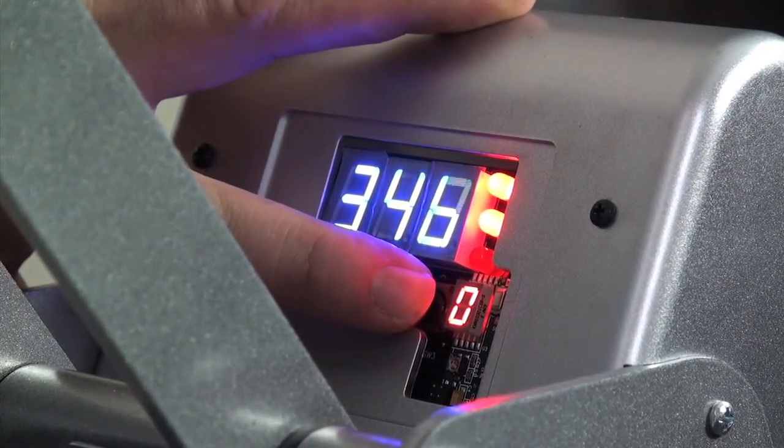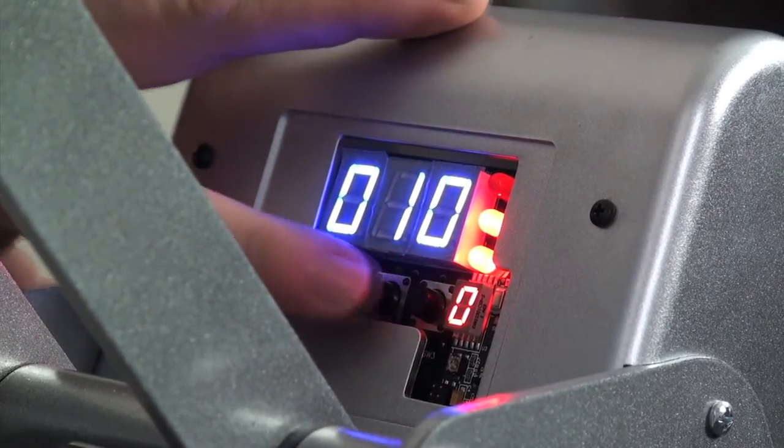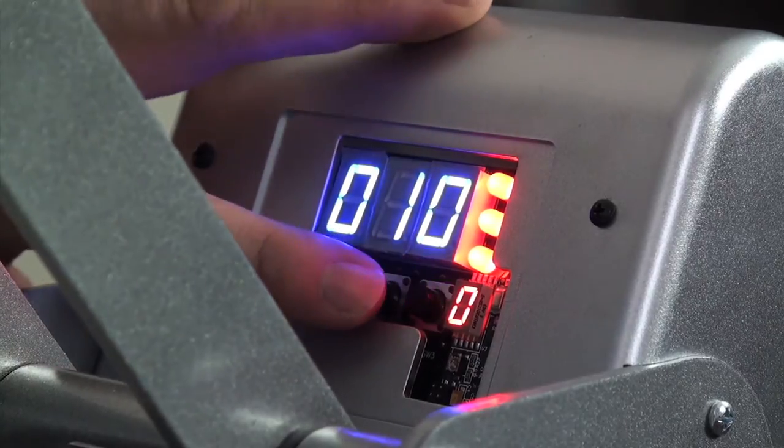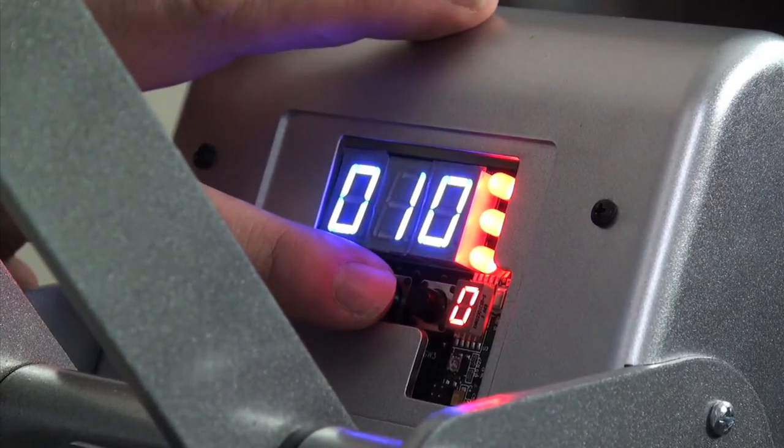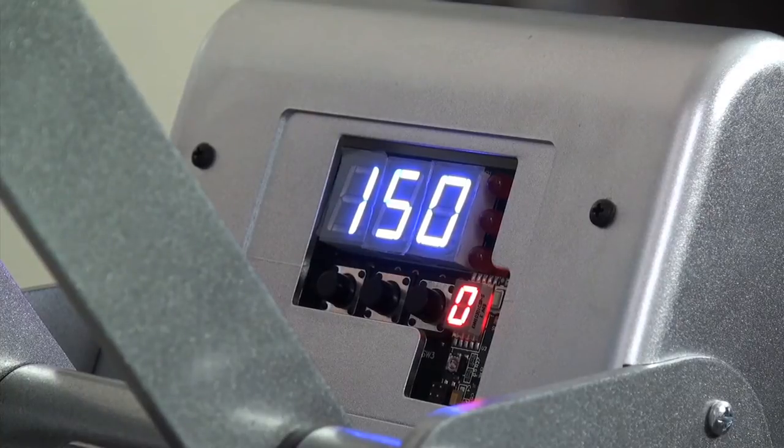To begin, set the temperature to 350 degrees. Press the center button again and set the first timer to 10 seconds. Press the center one more time and set the second timer to 10 seconds. And finally, press the center button to exit the setup mode and allow the press to heat up.